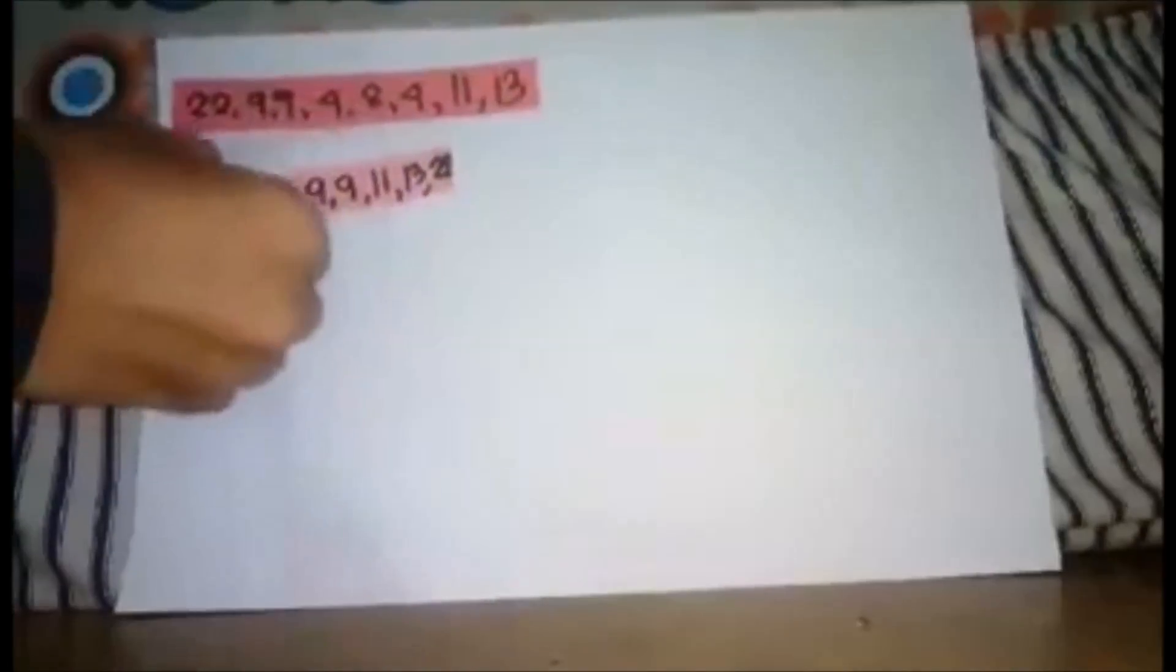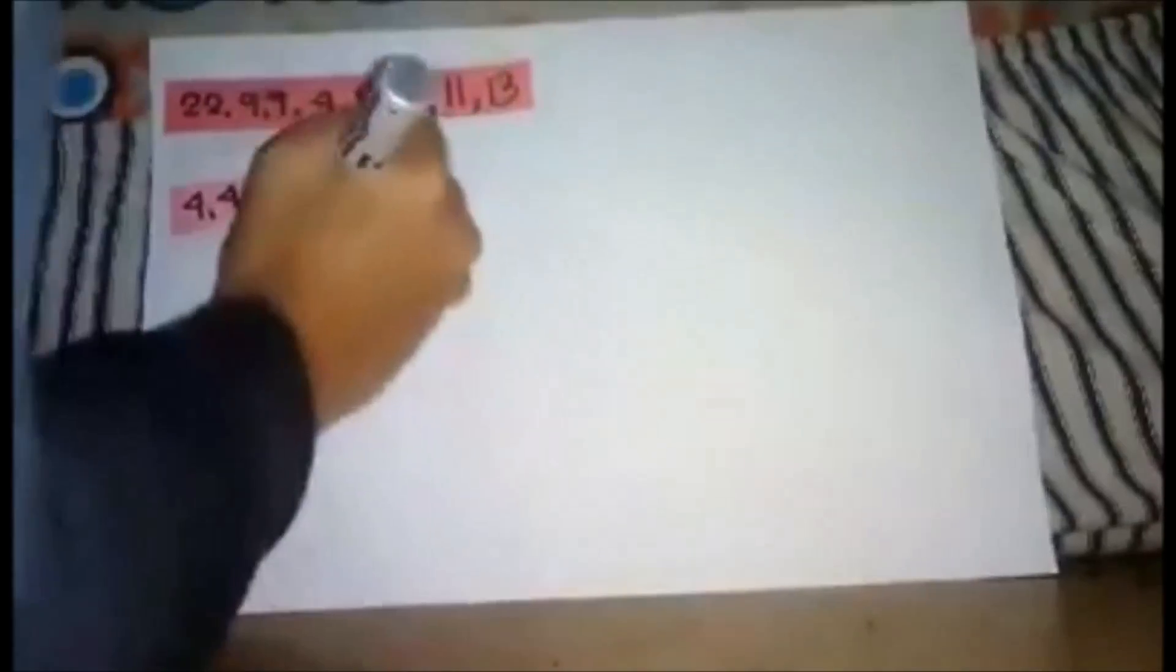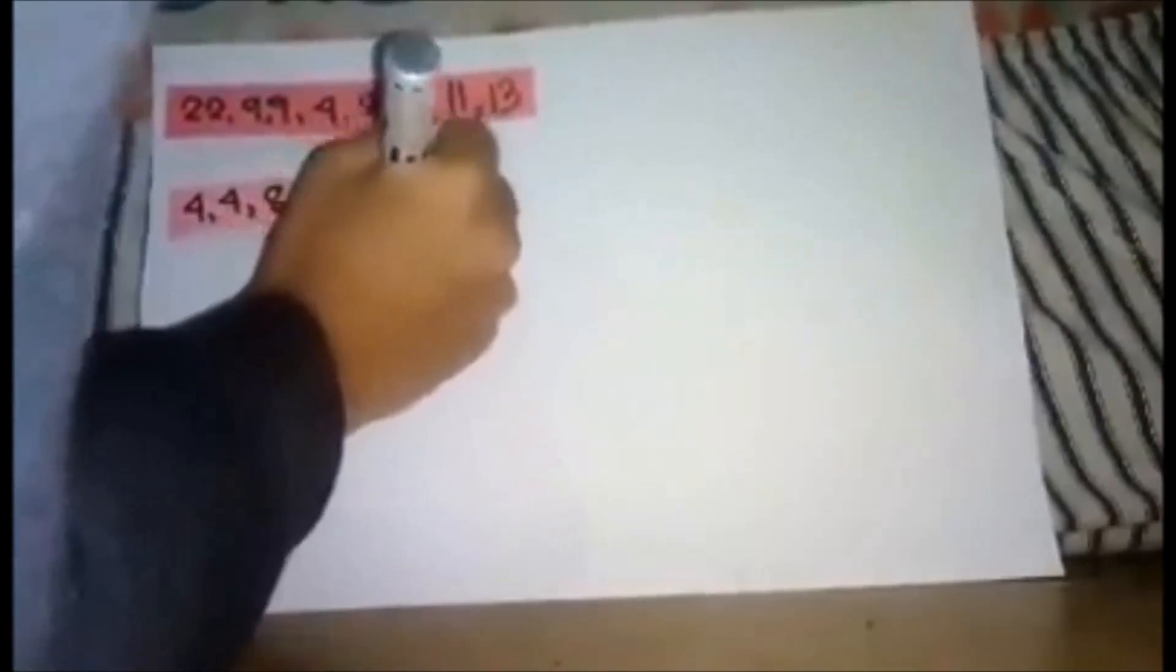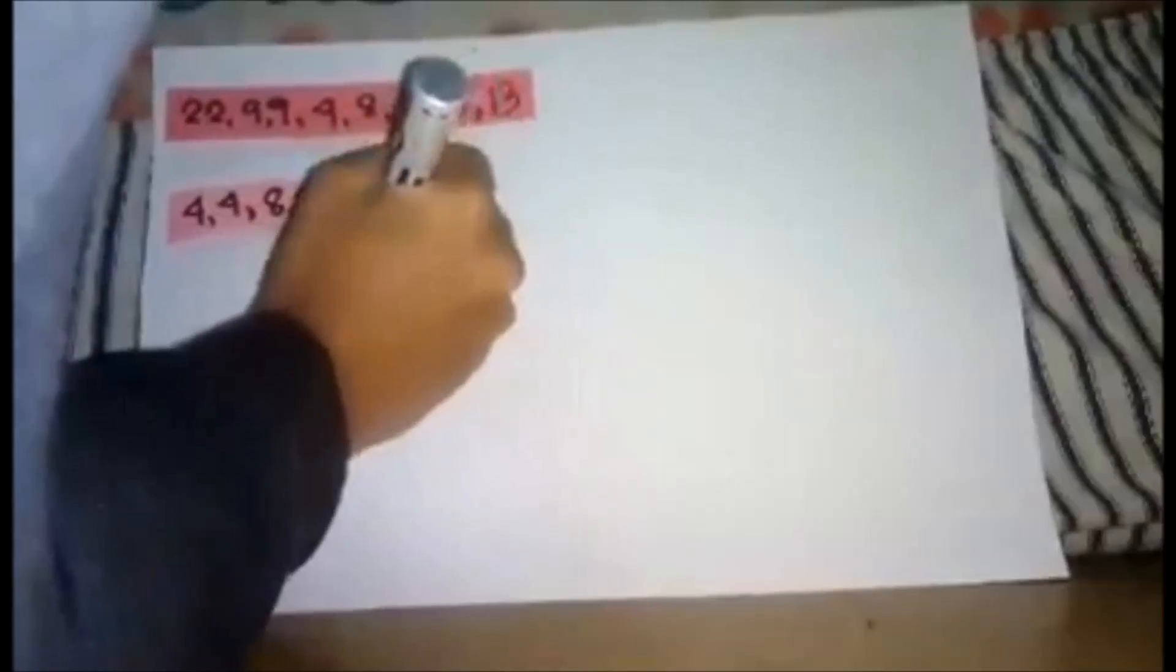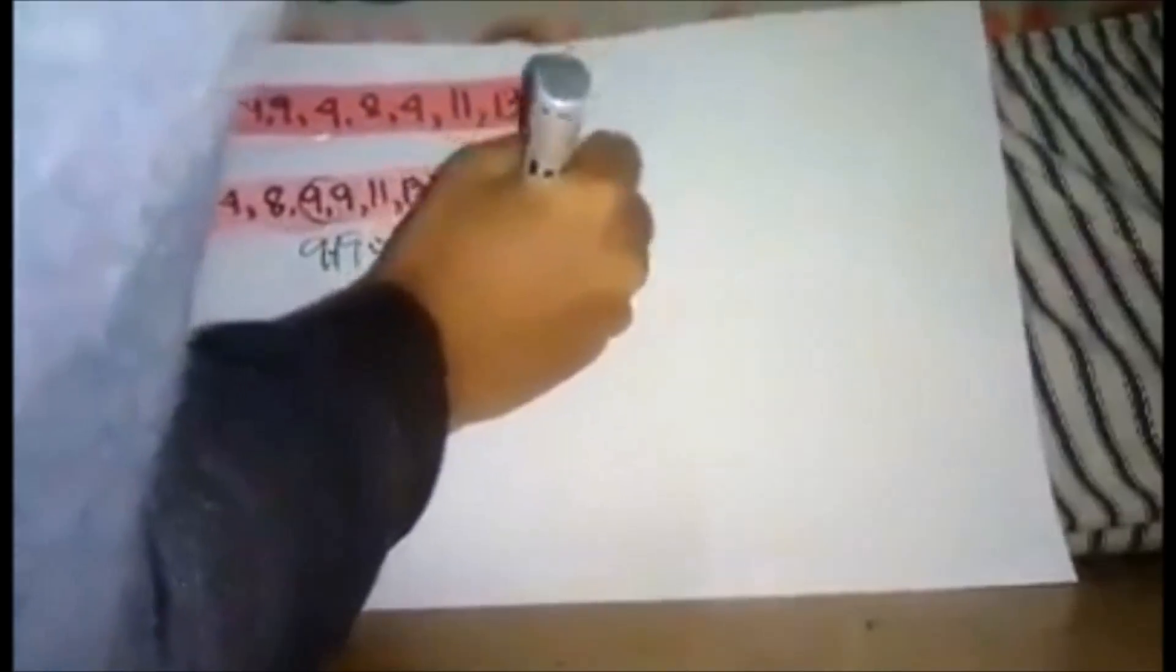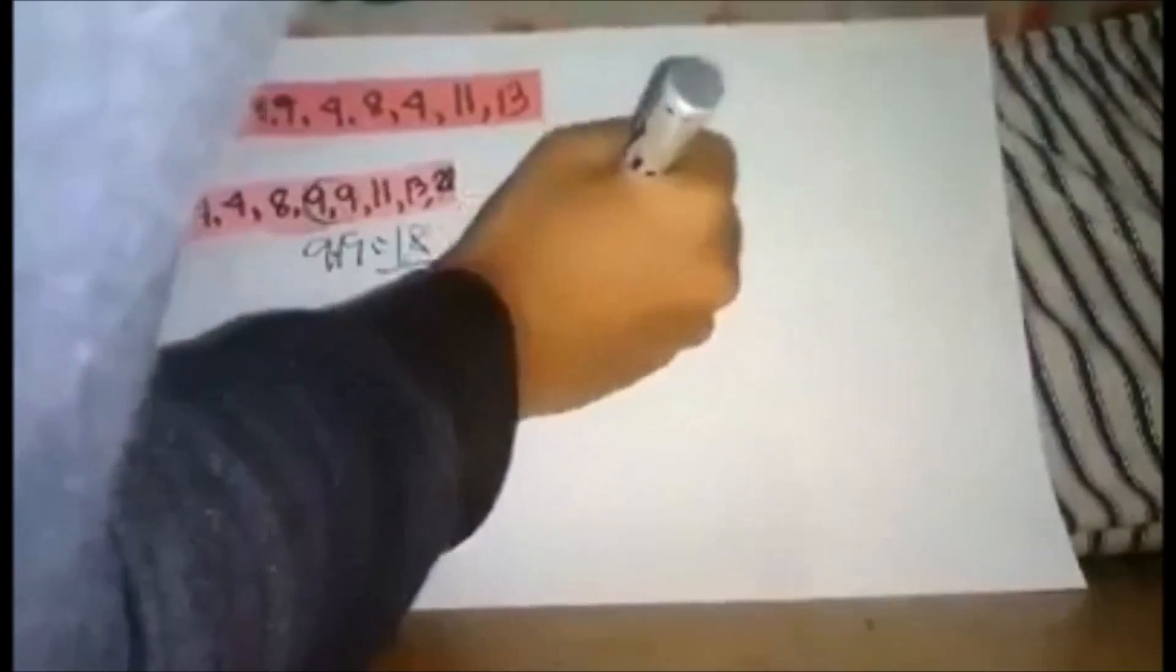Counting from each end: 1, 2, 3, 4, 1, 2, 3, 4, 1, 2, 3, 4. So there are two numbers in our median. 9 plus 9 equals 18, divided by 2 equals 9. So that is our median.